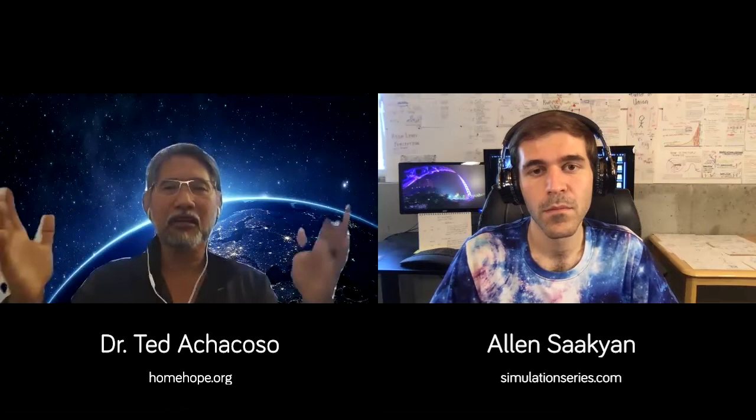You mentioned Aubrey de Grey's model. I really love the guy and the way he thinks as a biogerontologist. The model he has actually lends itself really well to epigenetics, which is the last pillar — we have seven pillars of health optimization medicine — and the last pillar is genetics.